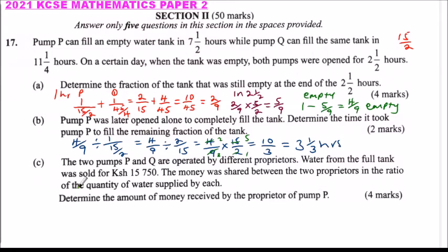Part C: the two pumps P and Q are operated by different operators. Water from the full tank was sold for 15,750 Kenyan shillings. The money was shared between the two proprietors in the ratio of the quantity of water supplied by each. Determine the amount of money received by the proprietor of Pump P.